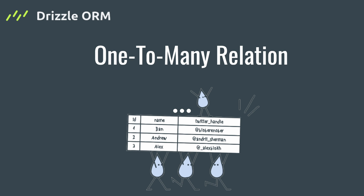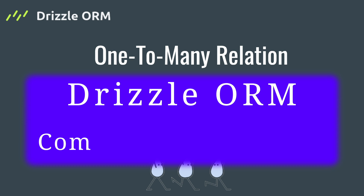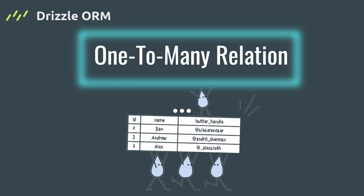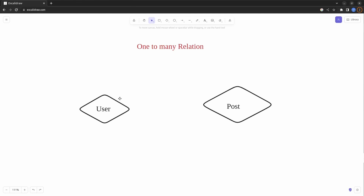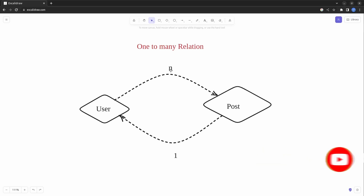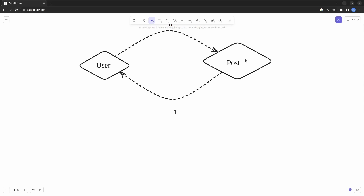Welcome back to the Sakura Dev channel and the Drizzle ORM comprehensive course. In this video I'm going to teach you how we can create a one-to-many relationship between two tables with Drizzle ORM. We have two entities here — a user and a post. A post belongs to just one user, but each user can have multiple posts. The N letter indicates that a user can have zero posts or more — one post, two posts, and so on.